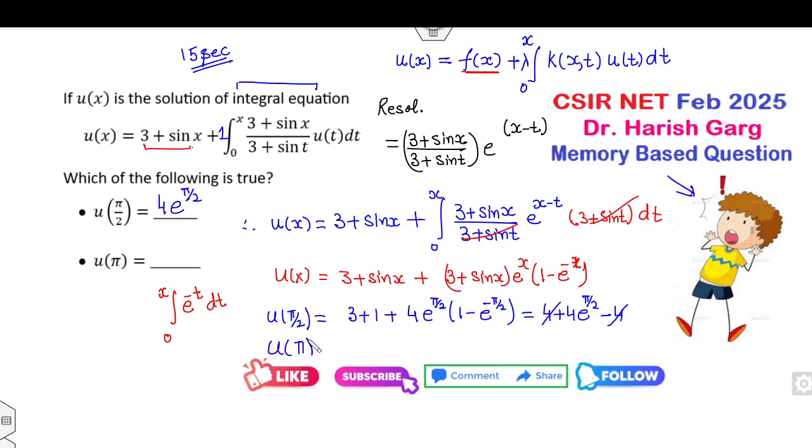Can you find the value at π? Since sine of π is 0, it is 3 plus 3 e of π times 1 minus e of minus π. So that will be 3 times e of π, which is the right answer of this problem.